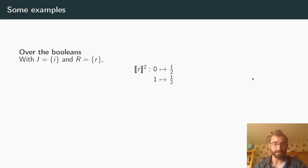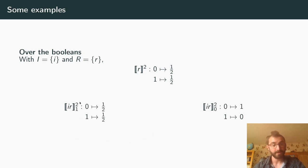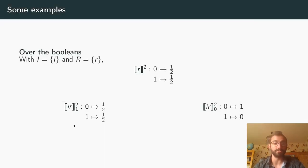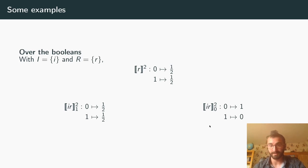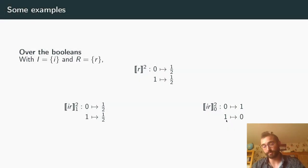Using those distributions, we can reason about our problems. For example over F_2, the program R is equal to zero with probability one half and one with probability one half. I times R, when I equals one, is simply equal to R, giving the same distribution. But when I equals zero, I times R is always equal to zero, so the probability it equals zero is one and the probability it equals one is zero.